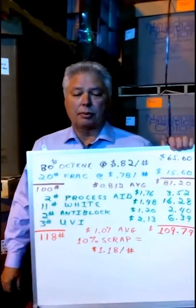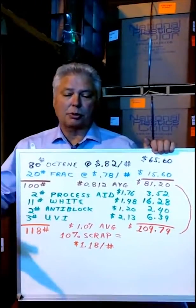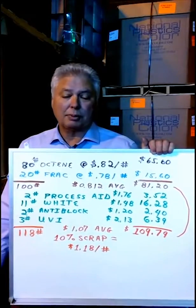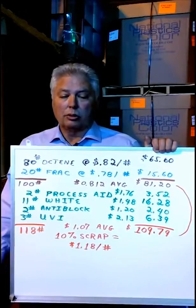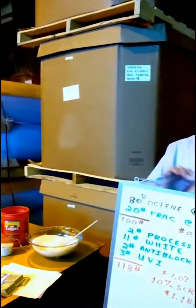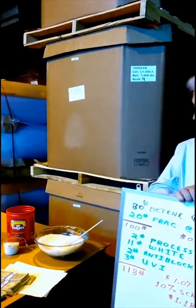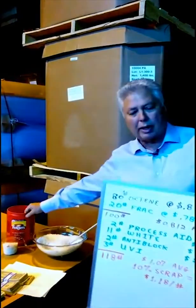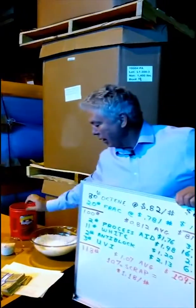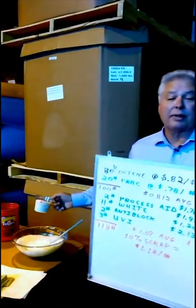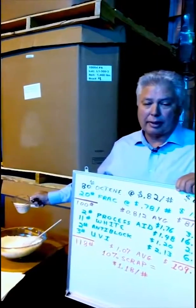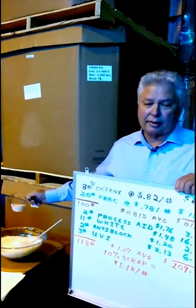This is an actual case. We have a customer who asked us for a quote on some white film for making shipping sacks. We start out with a hundred pounds of a combination of fractional melt and octene. And because it's a white shipping sack, we have to add in white color concentrate. And since there's a lot of linear low in it, we have to put in processing aid. And we have to put in anti-block and ultraviolet inhibitor.